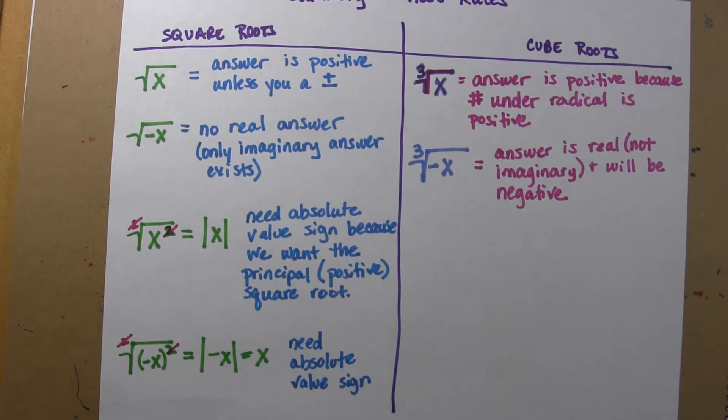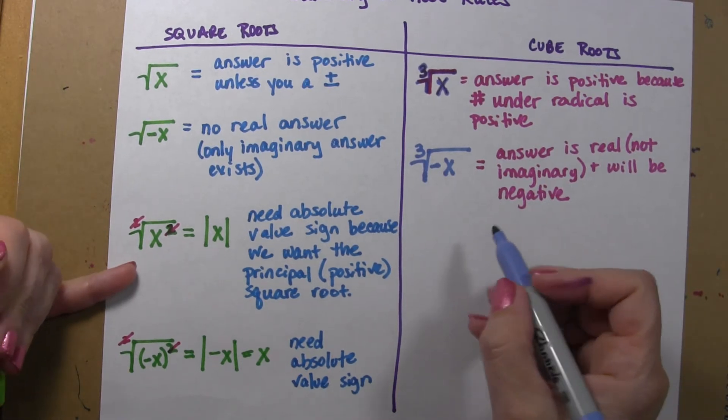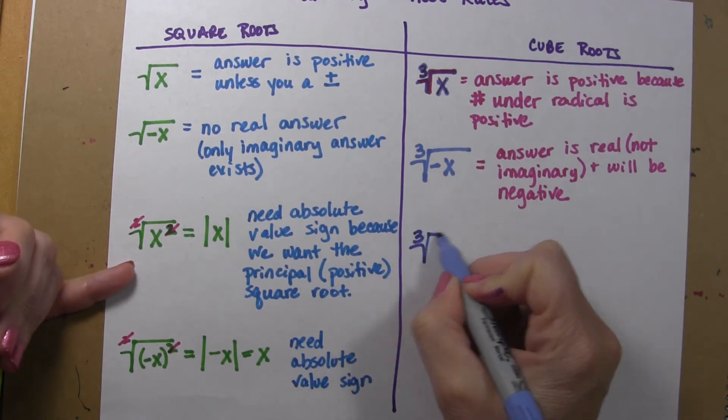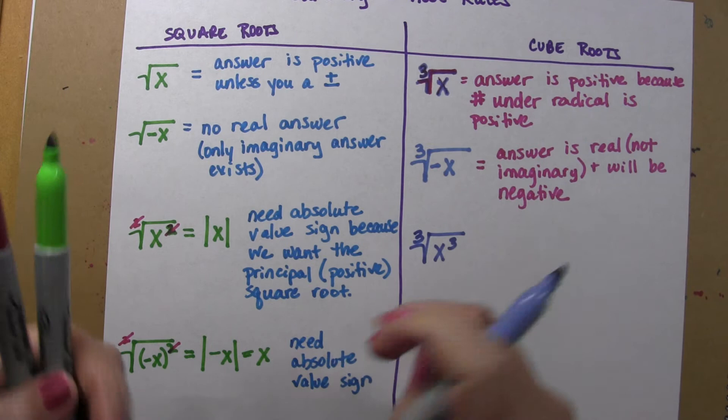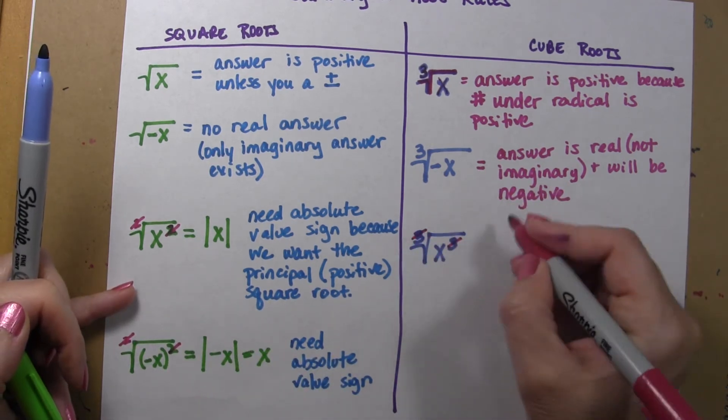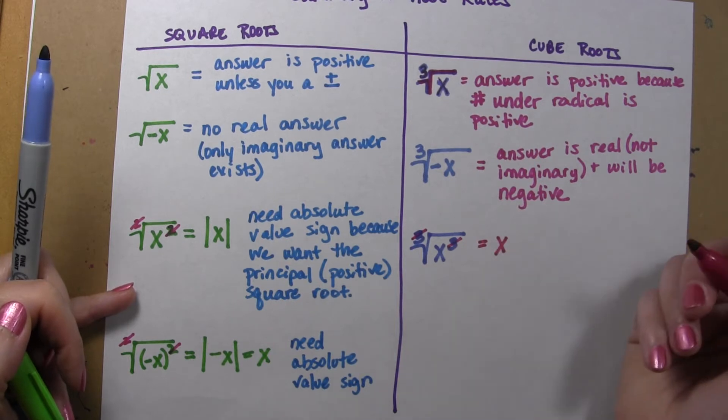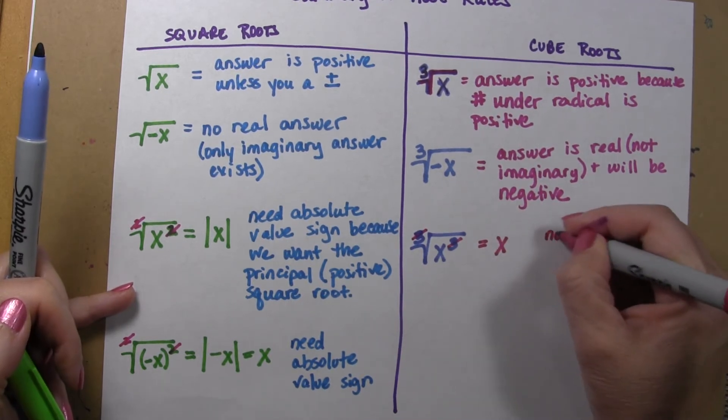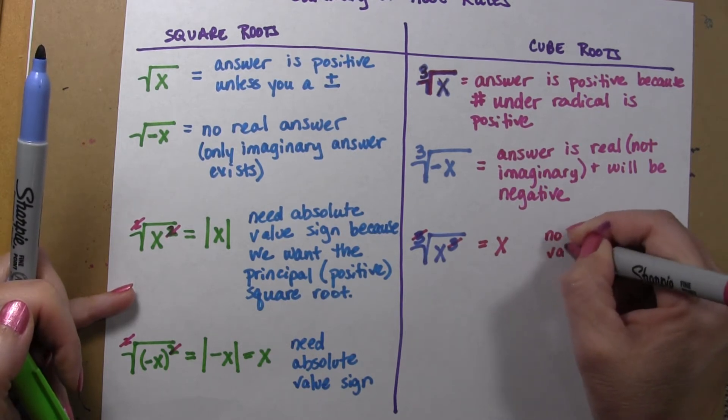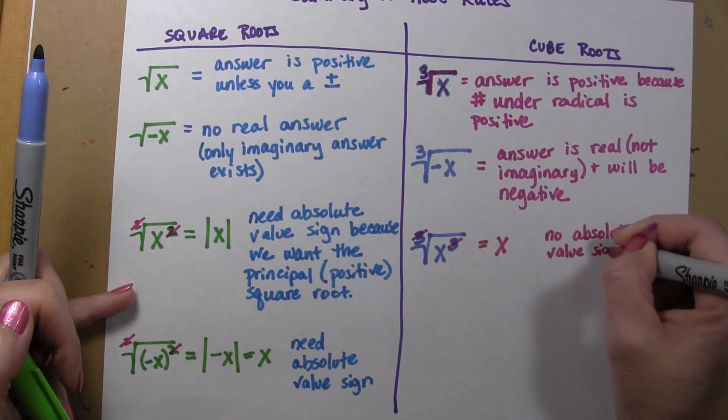Alright, now let's come over here to this side. If we are taking the third root of x to the third, we are going to cross these off, and we are just going to get an x. No absolute value sign is needed.